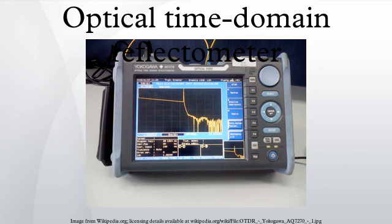An optical time domain reflectometer is an optoelectronic instrument used to characterize an optical fiber. An OTDR is the optical equivalent of an electronic time domain reflectometer. It injects a series of optical pulses into the fiber under test.